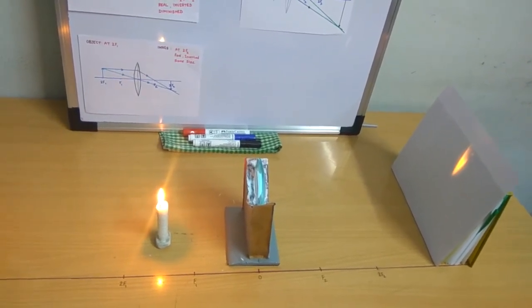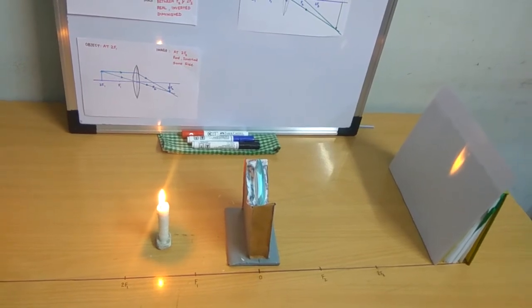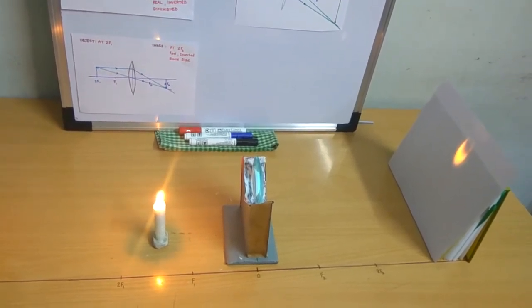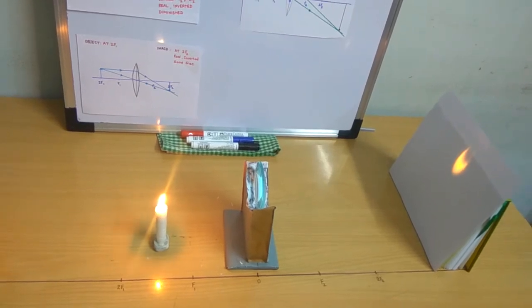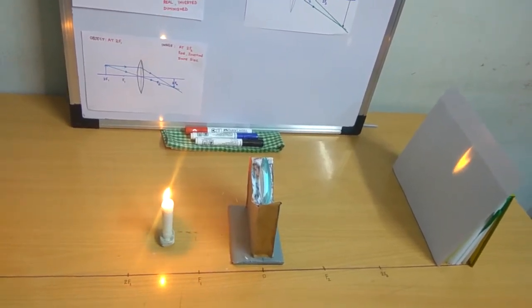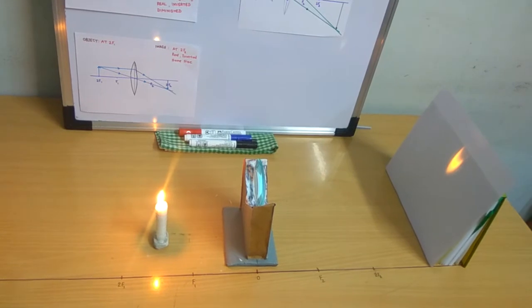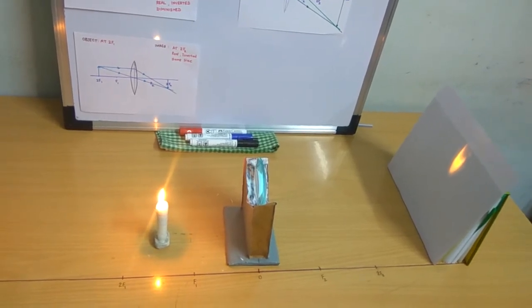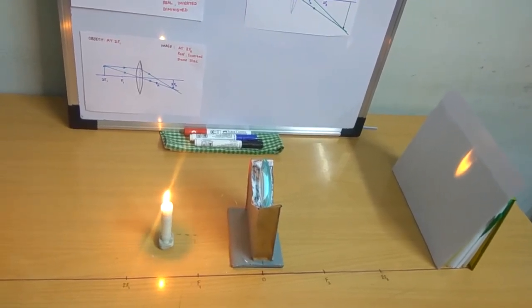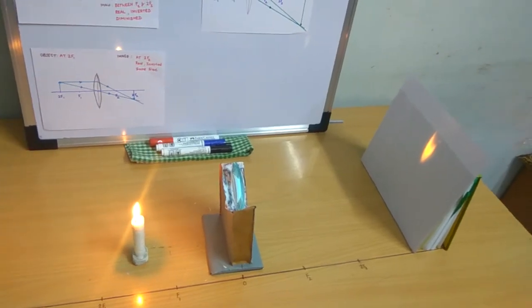In the first case, we will see when the object is placed between f1 and 2f1. You can see that the image of the object is formed beyond 2f2. The image of the flame of the candle—it is an inverted image, it is a magnified image.